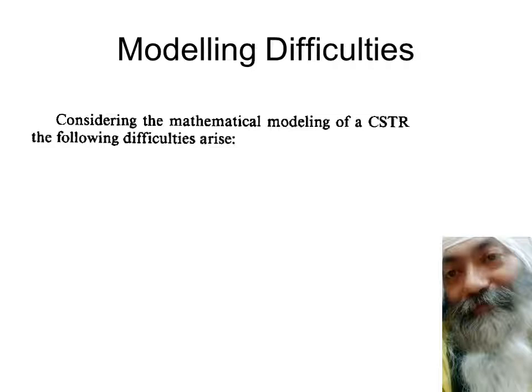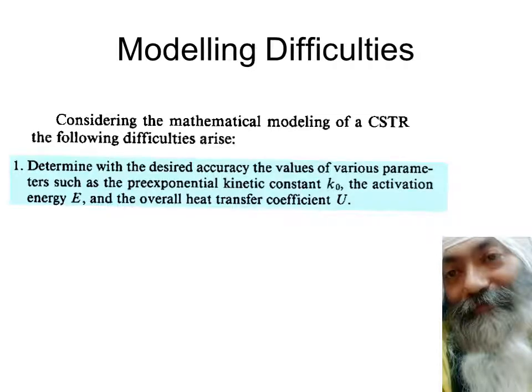Let us start with an example of how we face these difficulties. Let's say I start modeling a CSTR — a continuously stirred tank reactor. While modeling it, we use the Arrhenius equation with a pre-exponential constant K0, where R is the rate of reaction, K0 is the pre-exponential constant, and E is the activation energy.